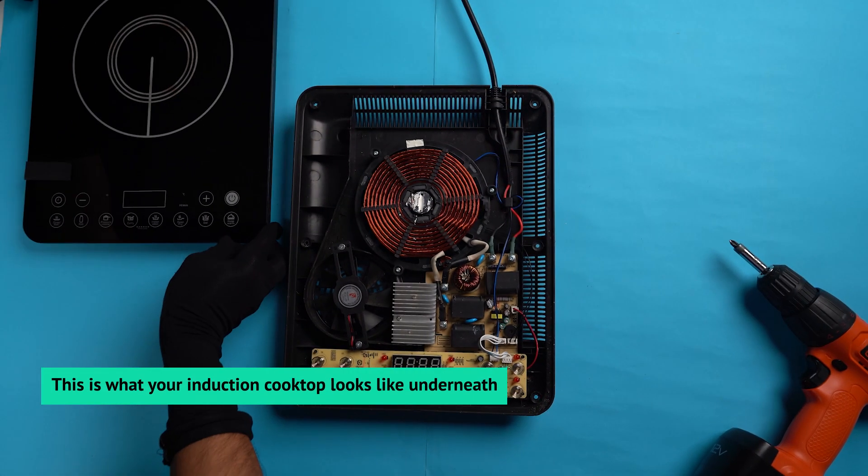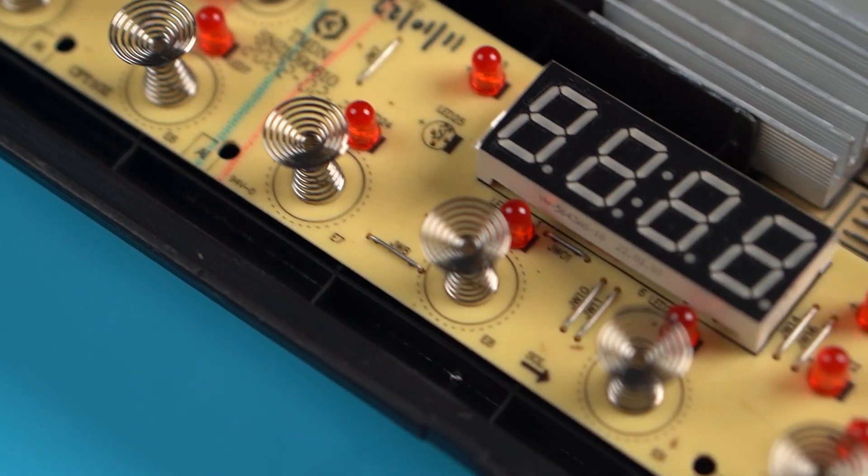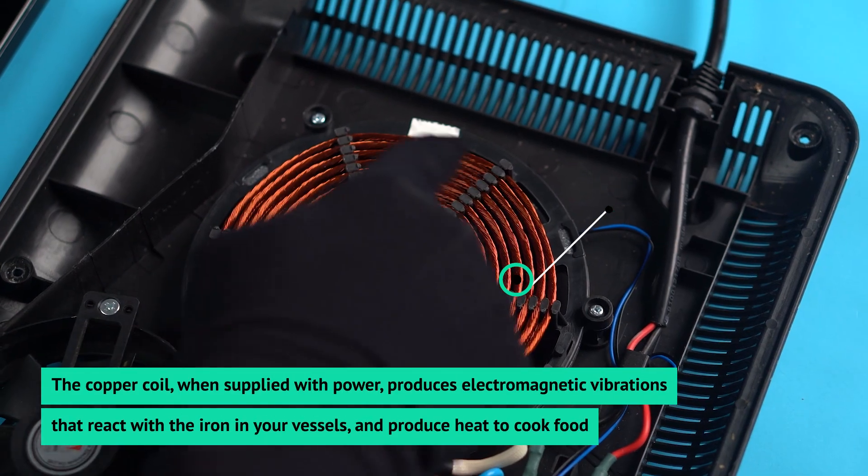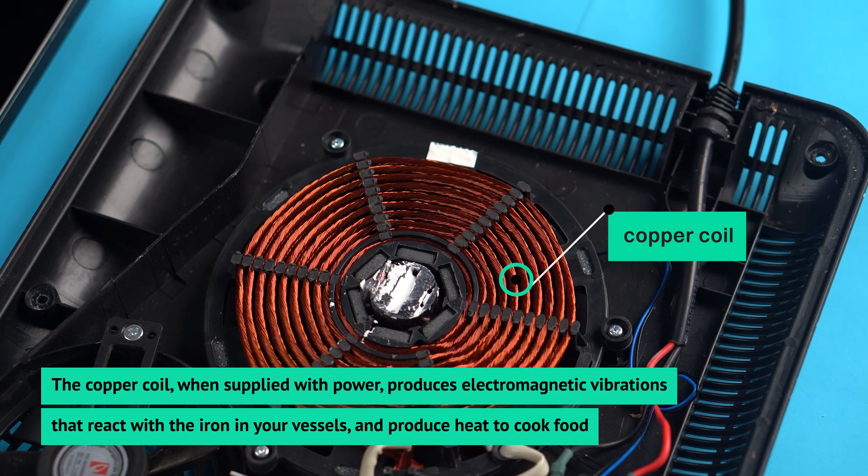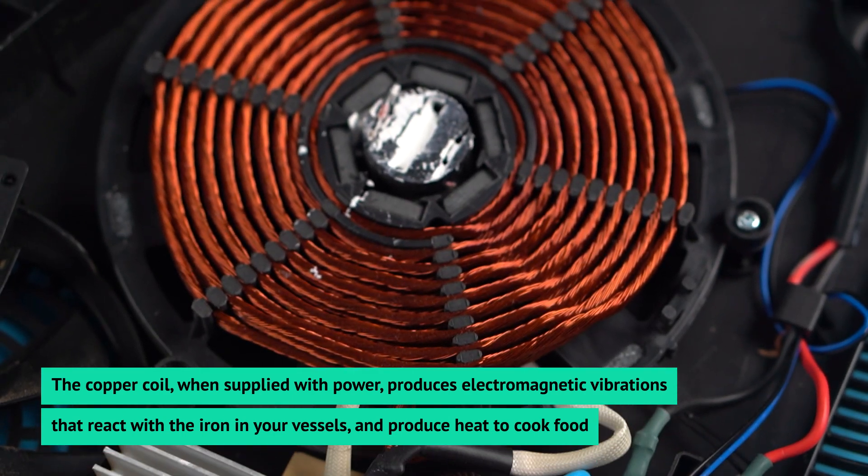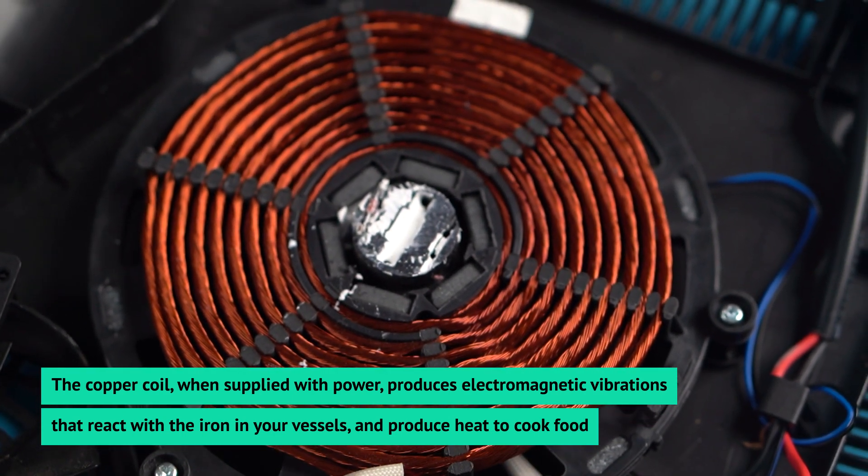This is what your induction cooktop looks like underneath. The copper coil, when supplied with power, produces electromagnetic vibrations that react with the iron in your vessels and produce heat to cook food.